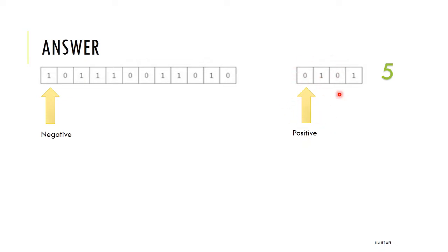I'm working on the exponent first because positive numbers are easier to work with. Since it's a positive number I don't have to do any changes — I can evaluate it directly. One zero one is actually five, so I already have the answer for the exponent: 5.